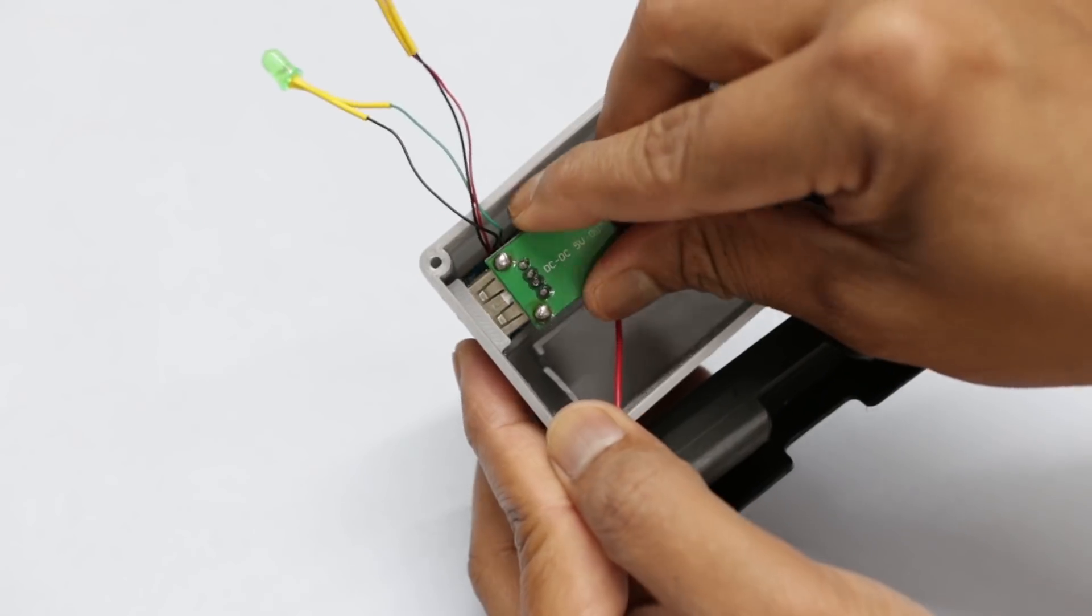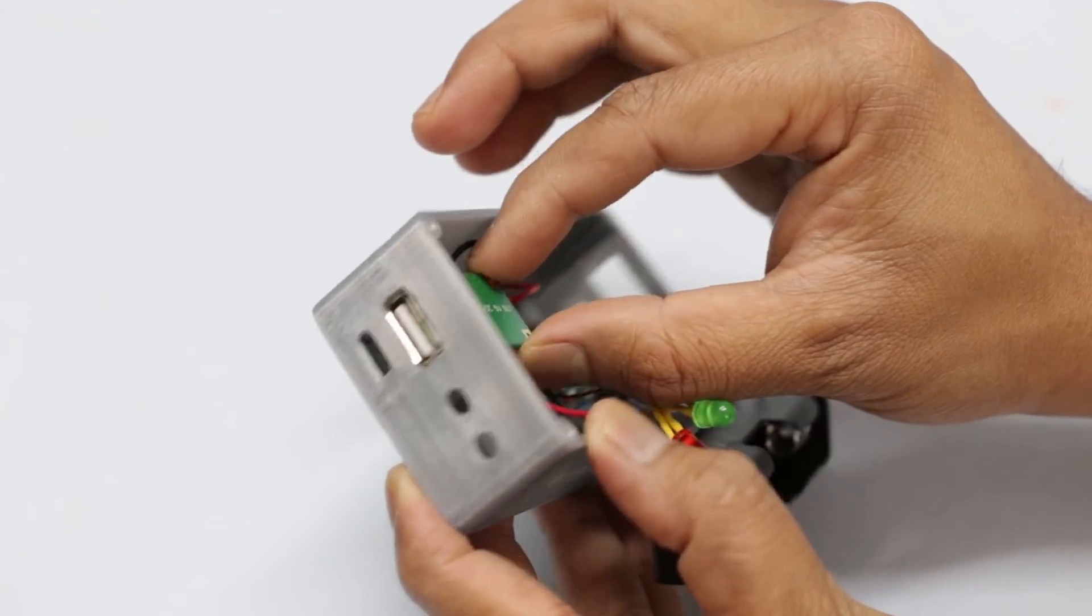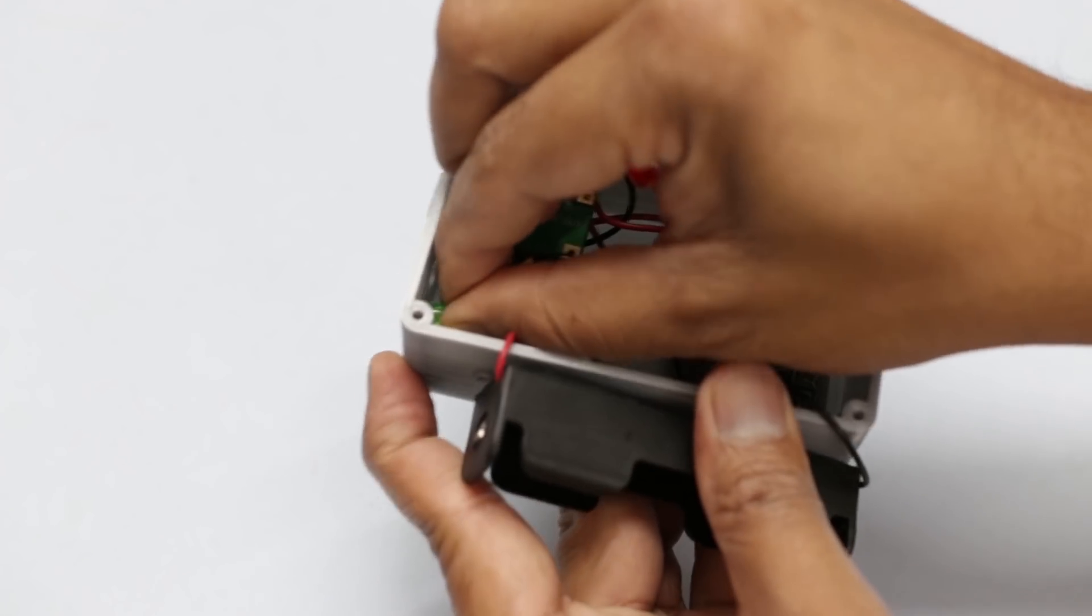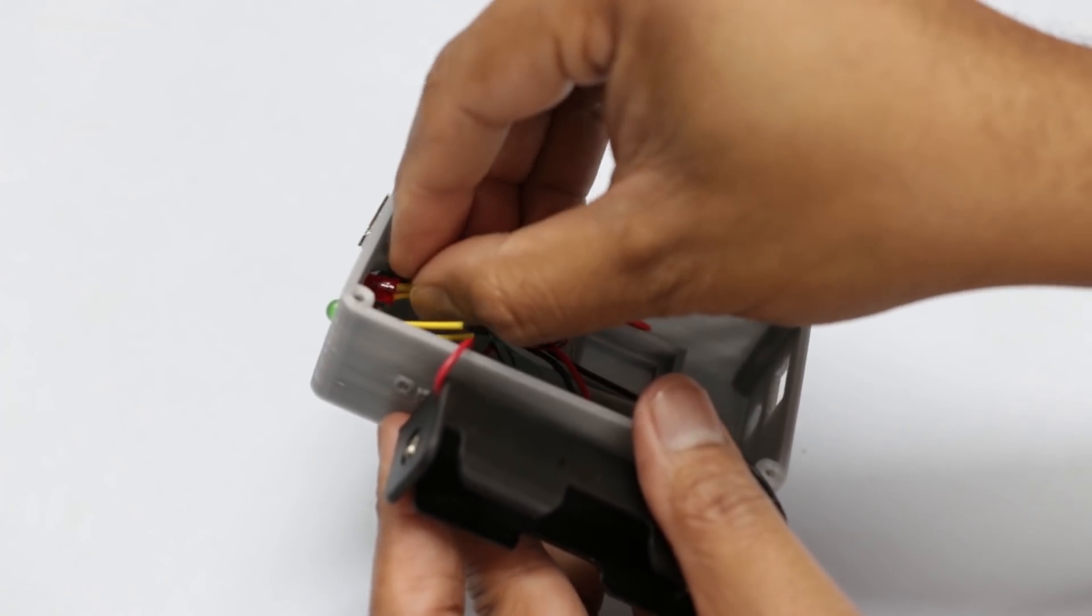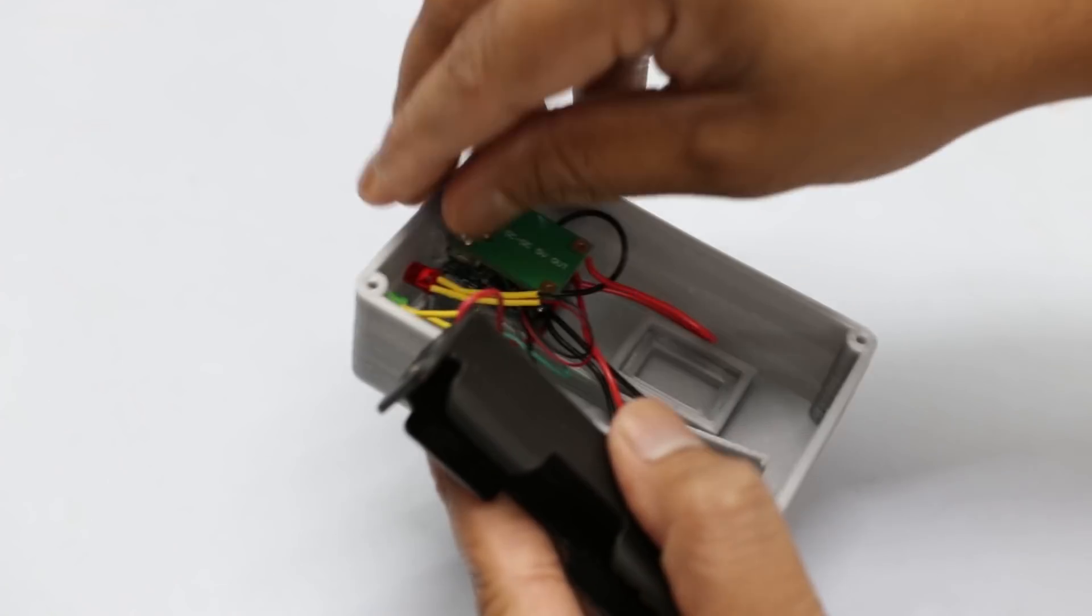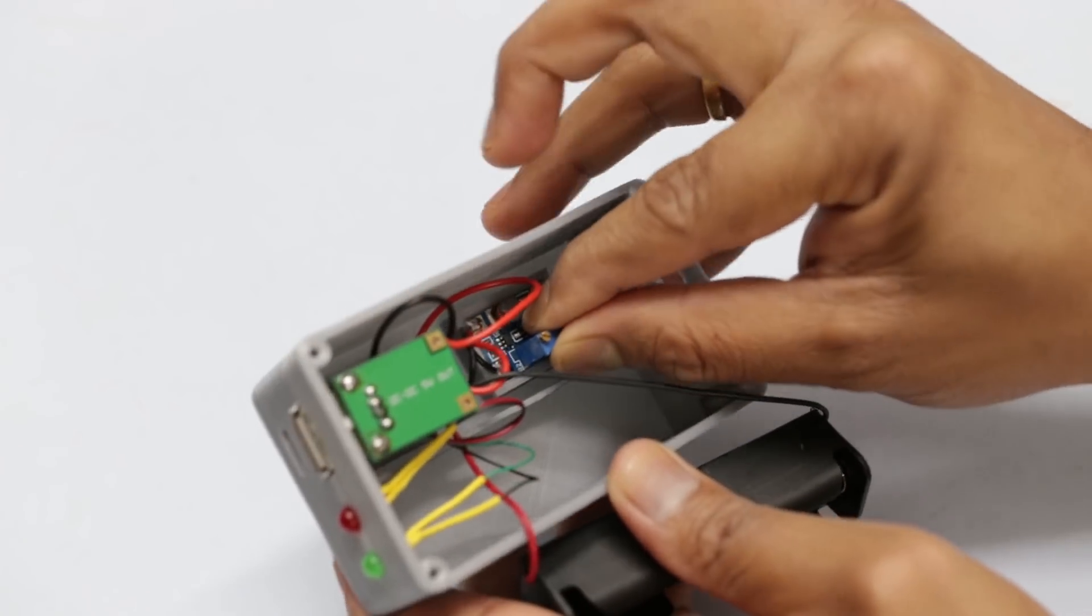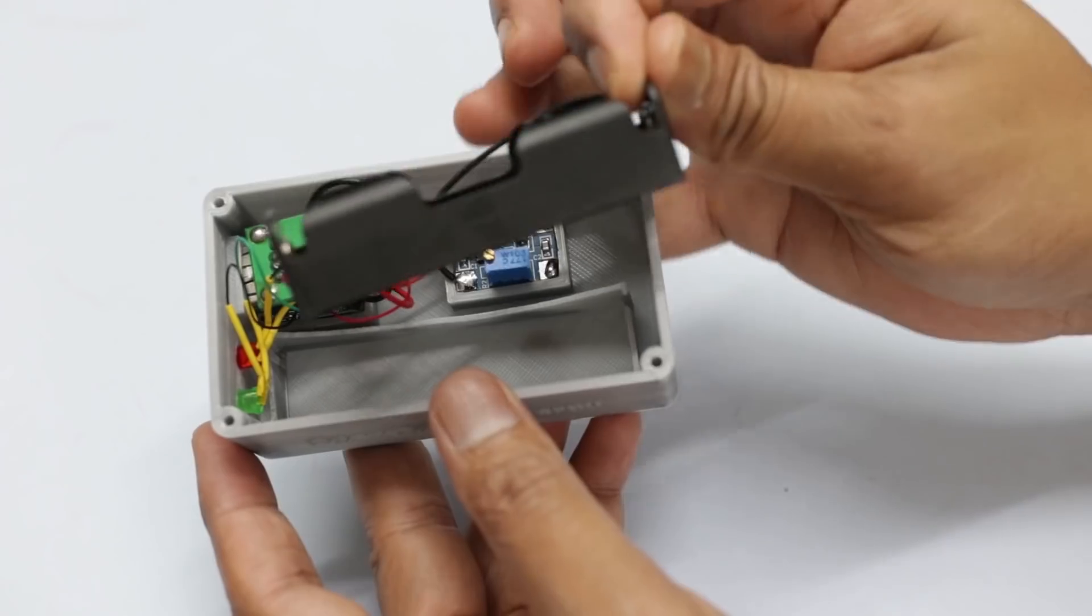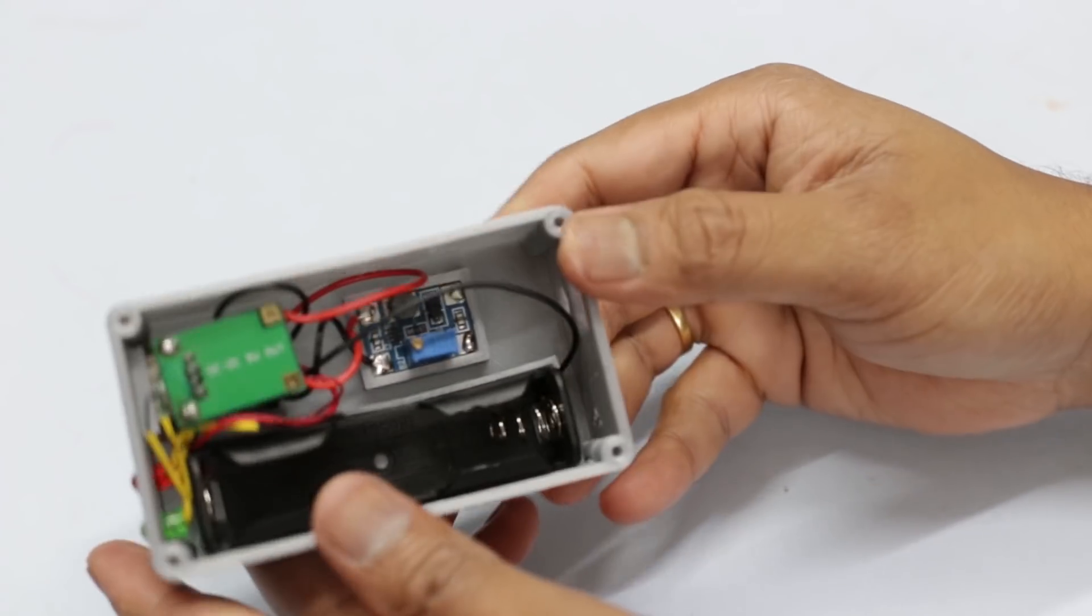Then I installed all the components to their respective slots. After installing all the components, I have connected the DC jack to the V output terminal of the SX1308 module through a SPST switch.